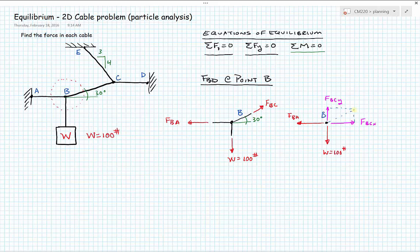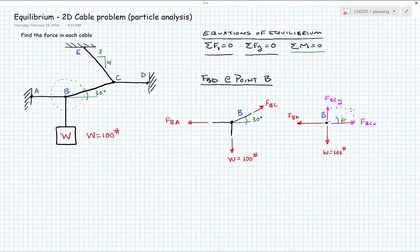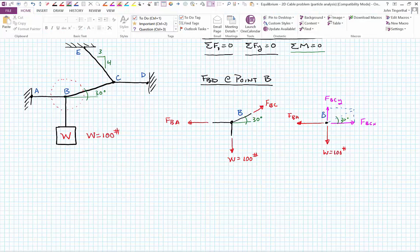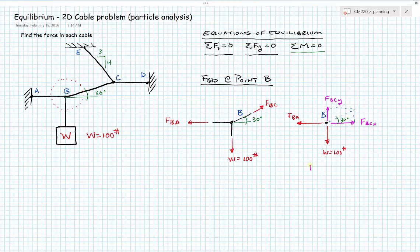Now that everything is in horizontal and vertical directions, we can solve our equations of equilibrium. Writing FBCx and FBCy in terms of FBC using trigonometry: since the angle is 30 degrees, FBCx equals FBC times cosine of 30 degrees, and FBCy equals FBC times sine of 30 degrees.